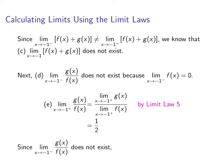Since the left-hand limit of the quotient does not exist, the two-sided limit of the quotient also does not exist. Remember that for the two-sided limit to exist, both one-sided limits must exist and agree.